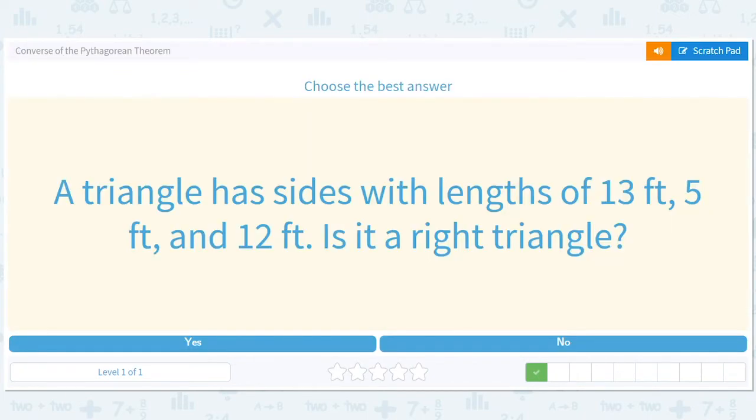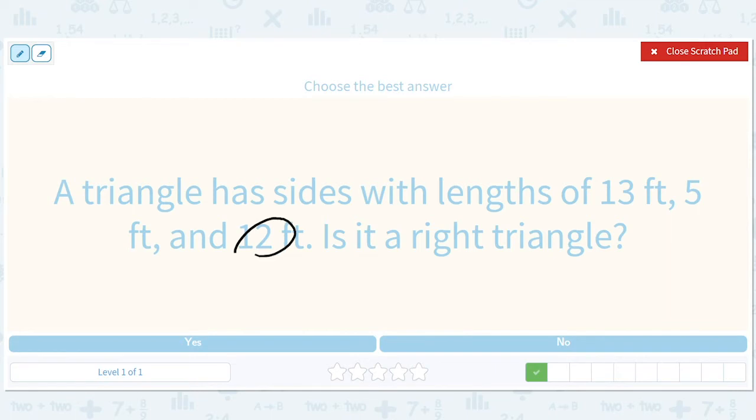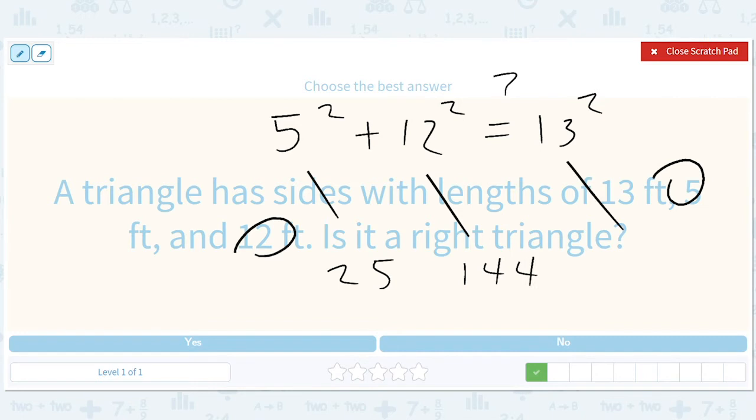How about 5, 12, and 13? Does 5 squared plus 12 squared equal 13 squared? Well this is 25, this is 144, this is 169. It is true that 25 plus 144 equals 169, so yes.